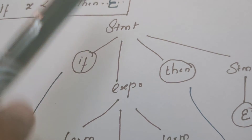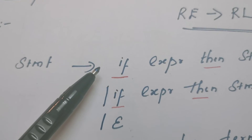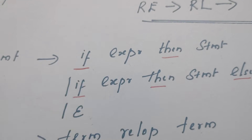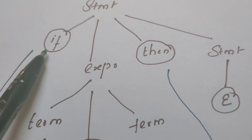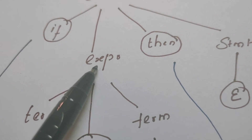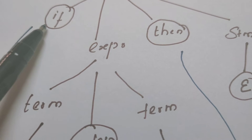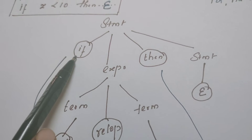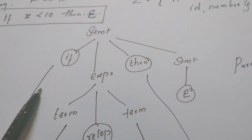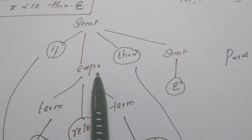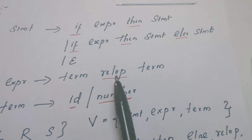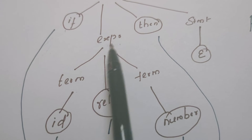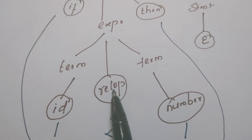This statement is replaced by the first rule: 'if expression then statement', so I have written four branches: if, expression, then, statement. Every time, only a variable can be further replaced — once terminals appear in the tree, growth stops from there. Now expression is replaced by 'term relational-operator term'.